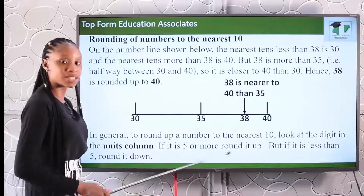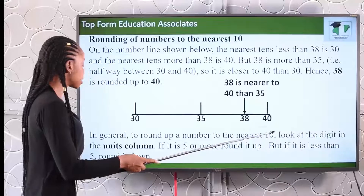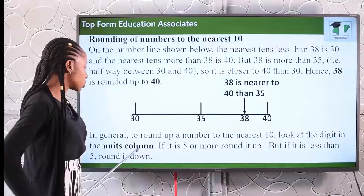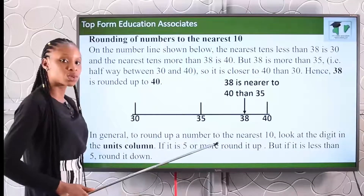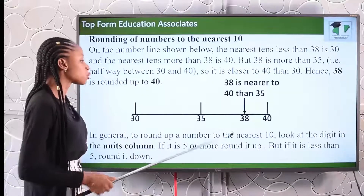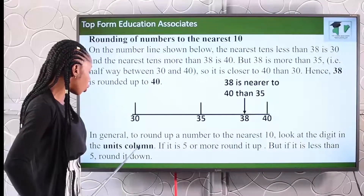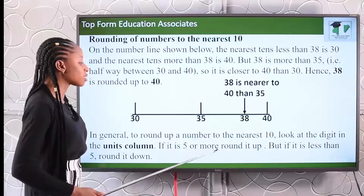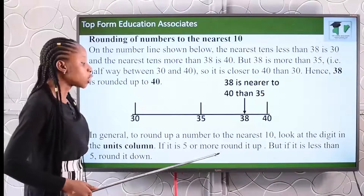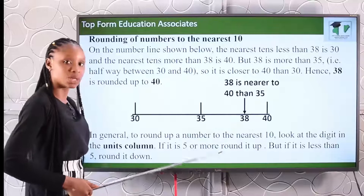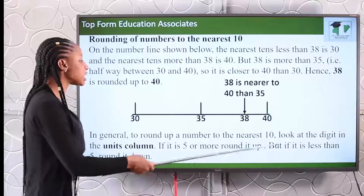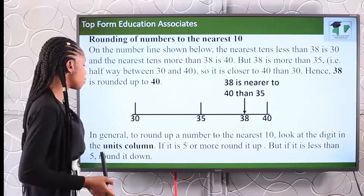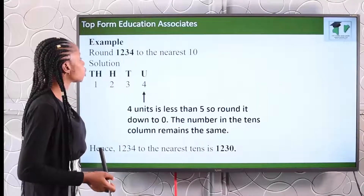In general, to round a number to its nearest ten, look at the digit in the units column. If it is five or more than five, you round it up — meaning you add one to the tens digit. But if it is less than five, you round it down — that is, you leave the units as zero.